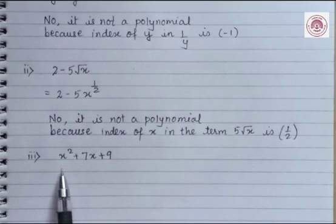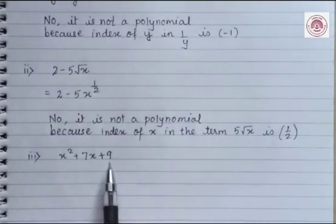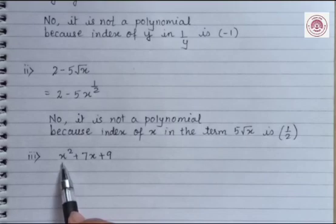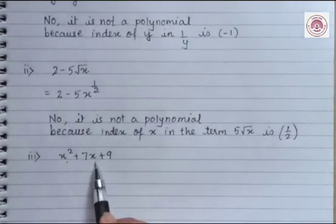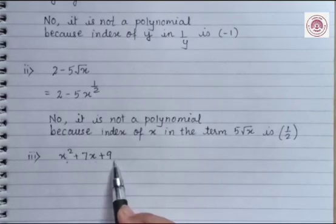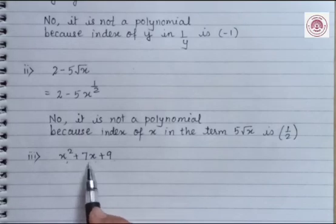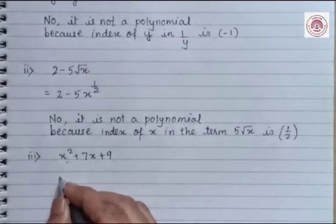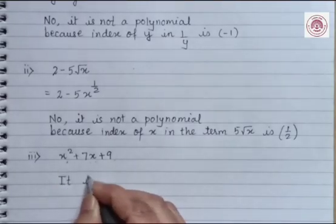Let's solve question number 3. The question is x squared plus 7x plus 9. Check the index of each term of this algebraic expression. As the index of each term is a whole number, therefore it is a polynomial.